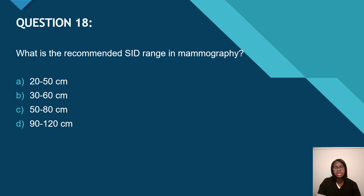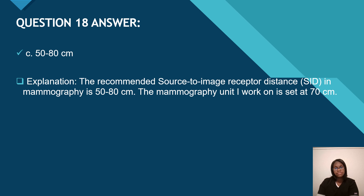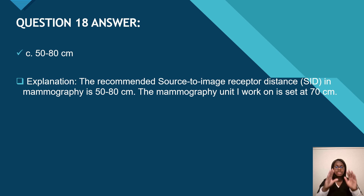Question 18: what is the recommended SID range in mammography? Is it 20–50 cm, 30–60 cm, 50–80 cm, or 90–120 cm? The answer is 50 to 80 centimeters. Source to image receptor distance is also known as SID. The mammography machine I work on is set at 70 centimeters. You can tell by looking above the face shield on the machine — it will show you what centimeters your SID is set at.